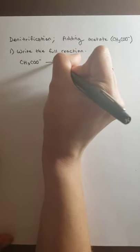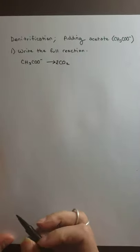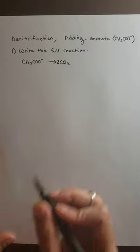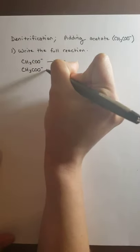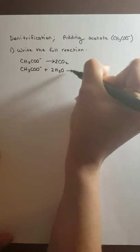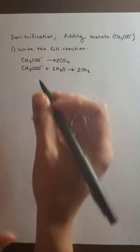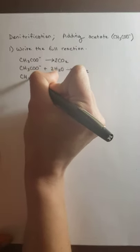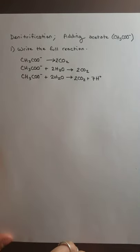We've got CH₃COO⁻, our acetate, and we're going to balance our carbons with CO₂. We have two carbons, so we need two CO₂s. Next, we balance our oxygens with water: CH₃COO⁻ plus 2H₂O goes to 2CO₂. Then we balance our hydrogens with protons, giving CH₃COO⁻ plus 2H₂O going to 2CO₂ plus seven protons.